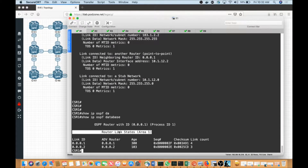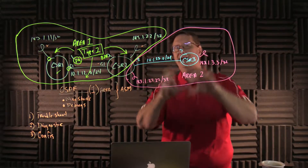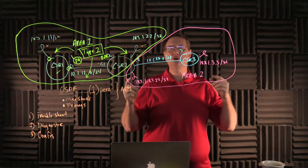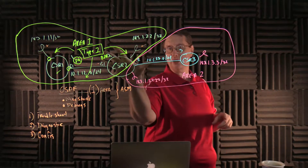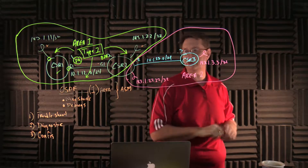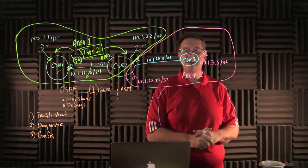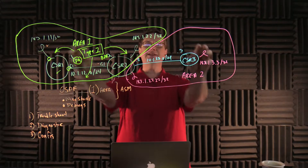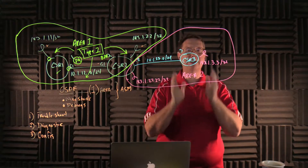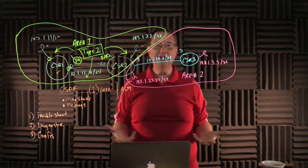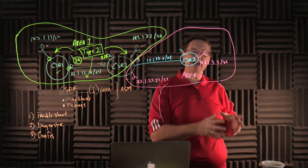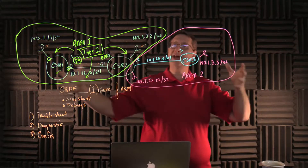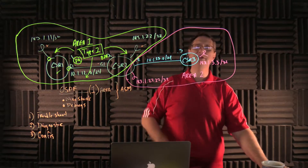The 'show IP OSPF database' will now only include router link states. I want to continue this process by building Area 2 on CSR2 and CSR3. What you'll learn is CSR2 will be able to reach all prefixes on CSR3 and CSR1. However, CSR1 will not be able to reach prefixes on CSR3, because the Type 1 LSAs we're generating do not ever leave their areas. A process must exist to move prefix information between areas for holistic reachability. We'll build that peering in the next video.